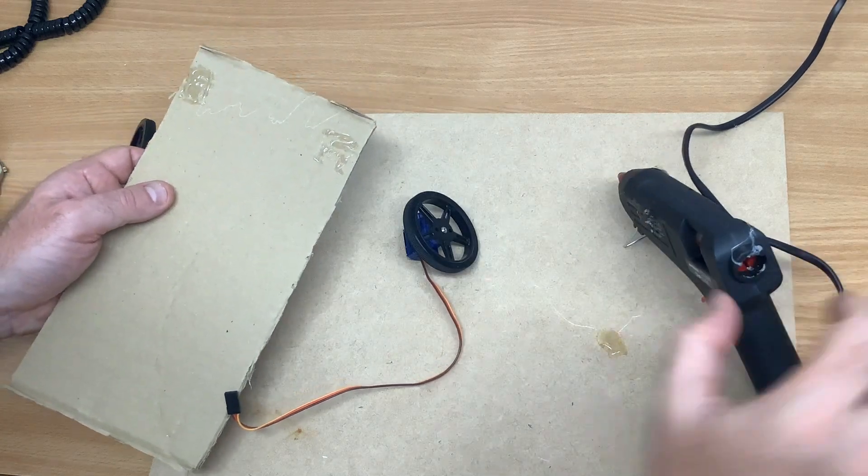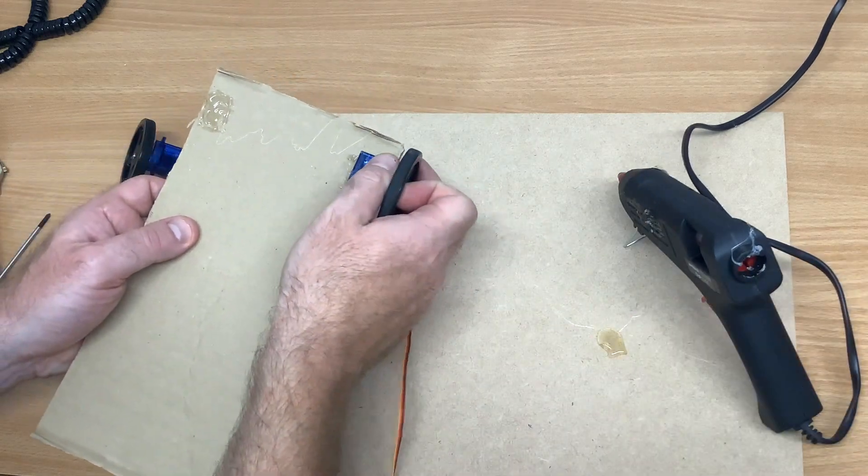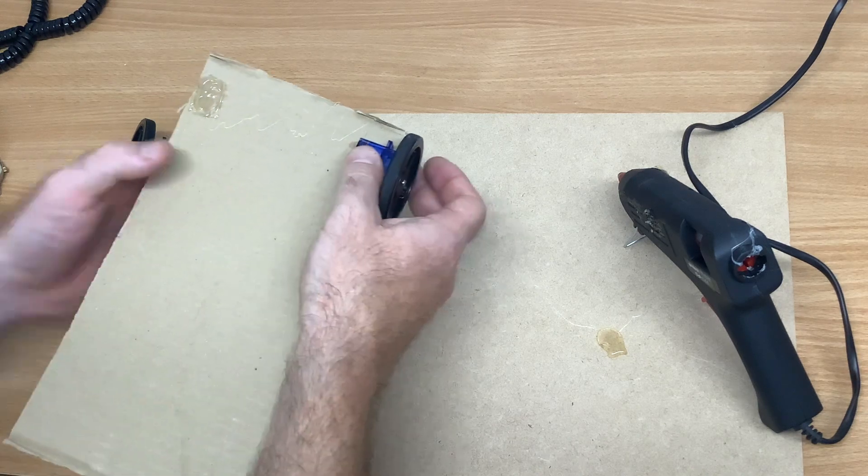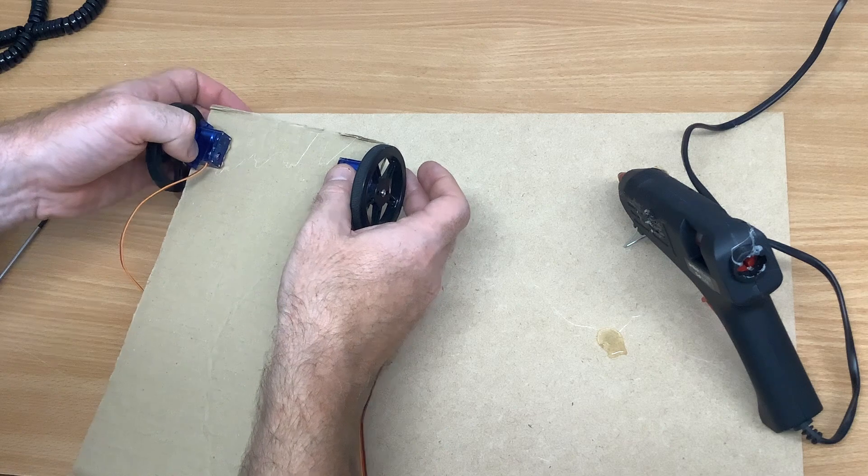Then we'll put the servos on top, press down really hard, and hold them in place for a minute or two while the glue sets.